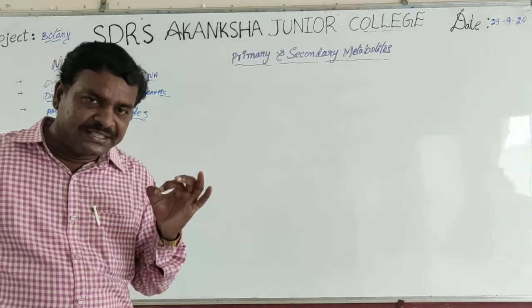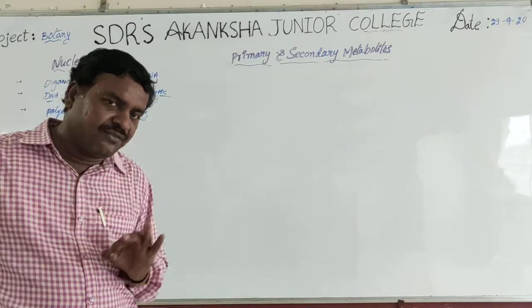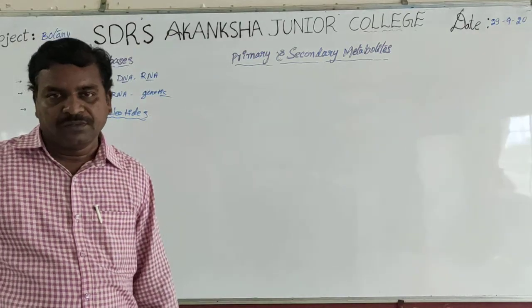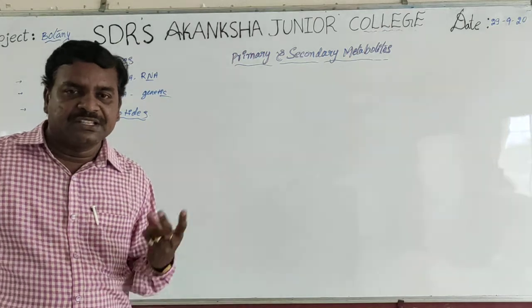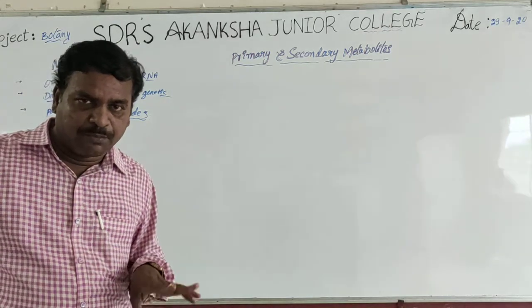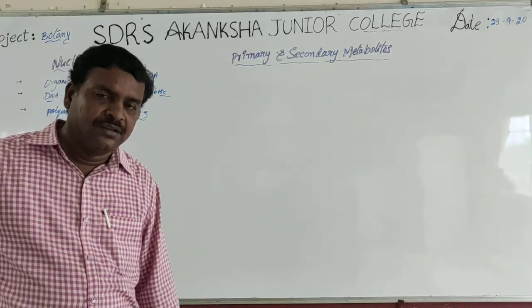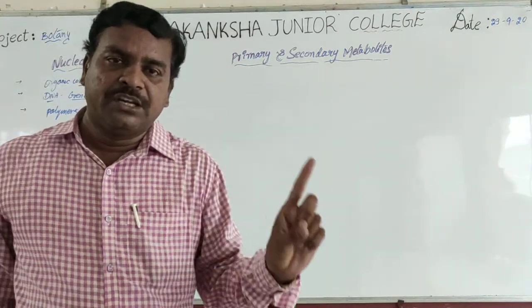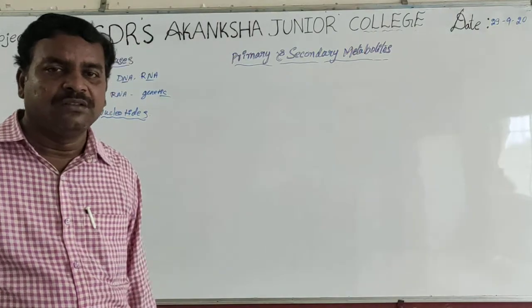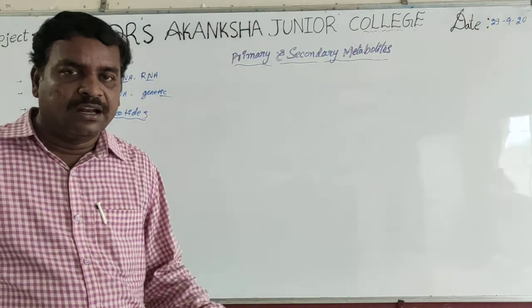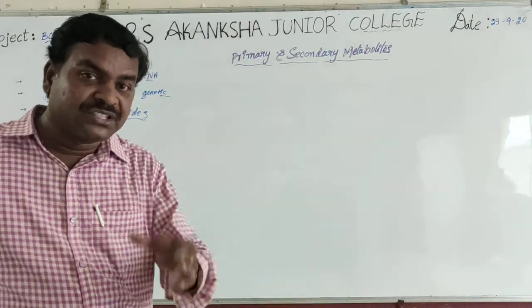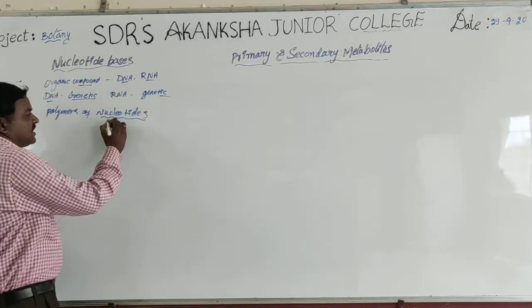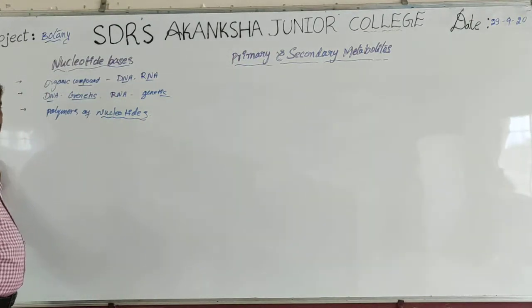Nucleotides are the basic units of DNA and RNA. DNA is represented by two strands of polynucleotides, but RNA is made up of one strand of polynucleotides. So DNA and RNA are the polymers of nucleotides, in which the basic units are nucleotides.